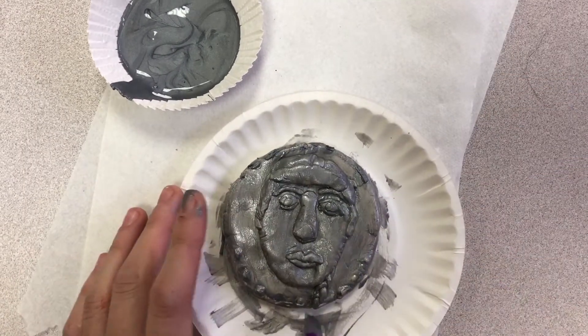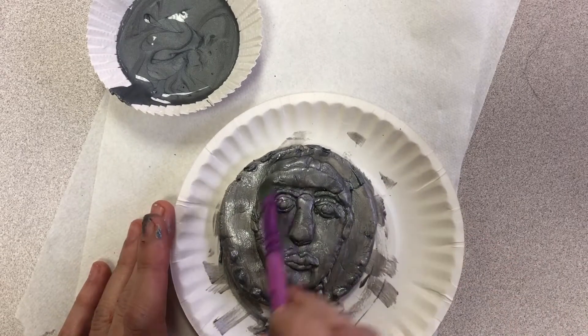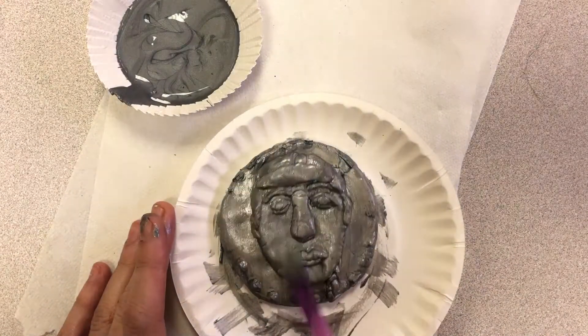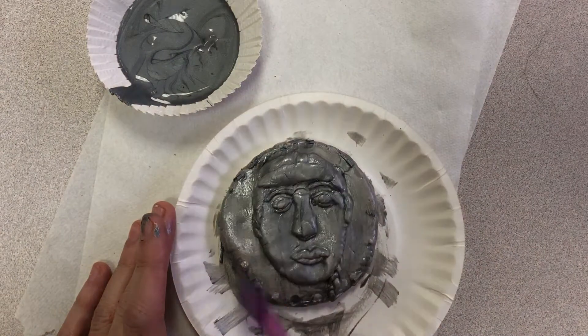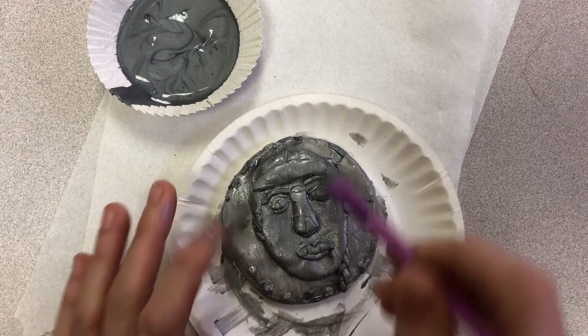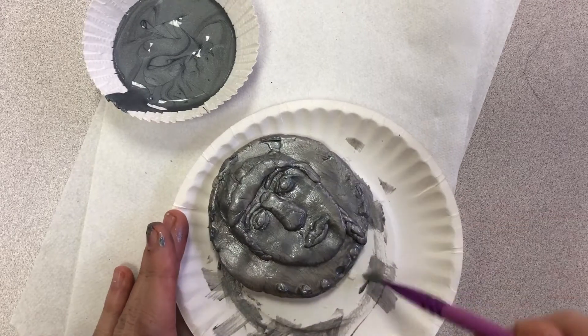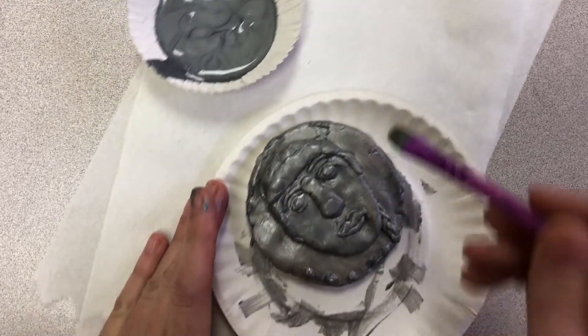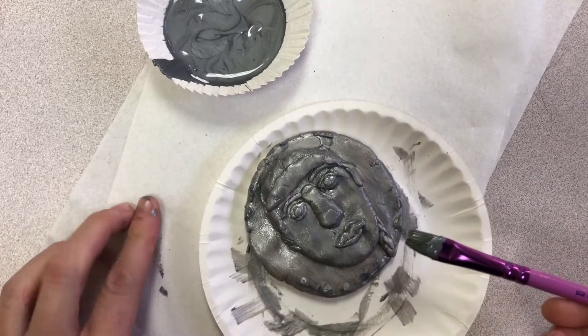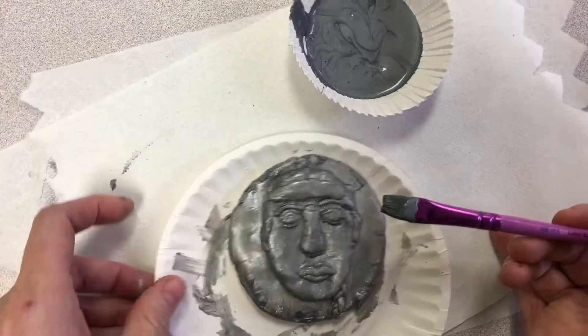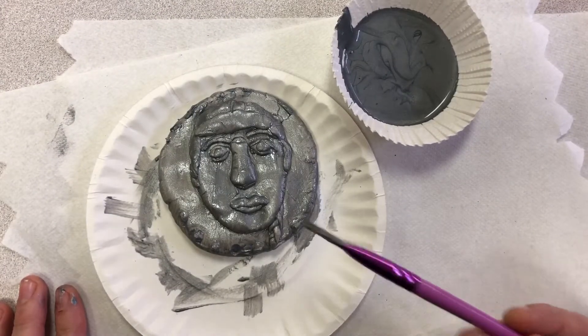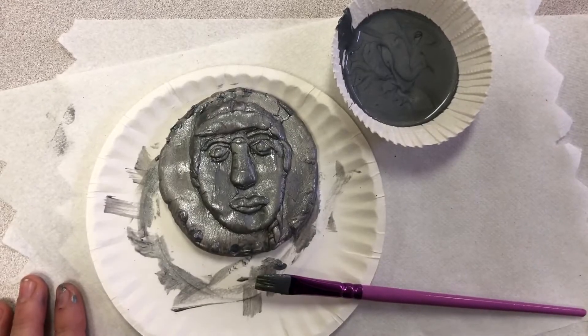And then I'm gonna let it dry and we're gonna do a process where we get some black paint into the little nooks and crannies to make it have that age look, like a patina, like an old coin that's been loved and worn and used and just kind of ready to go. So I'm gonna pause it here and then we'll come back.